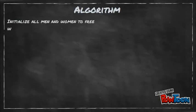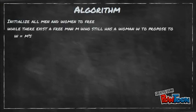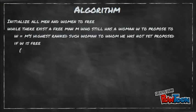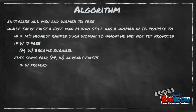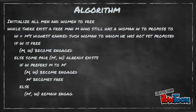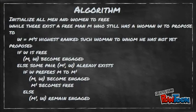Initially, the algorithm sets all men and women to free. While there exists a free man who still has a woman on his list, let W be M's highest ranked woman to whom he has not yet proposed. If W is free, MW become engaged.